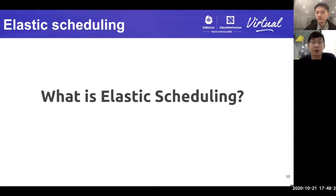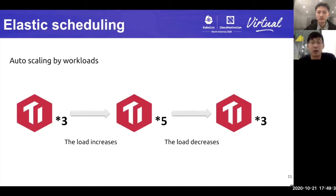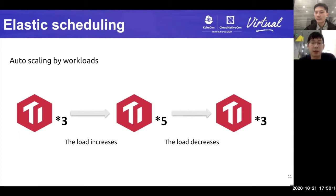Now let's move on to elastic scheduling in TiKV. What is elastic scheduling? Briefly speaking, elastic scheduling is auto-scaling depending on the workloads. When the TiKV cluster is deployed, normally the scaling of TiKV cluster is able to handle the average load. But sometimes the workload becomes larger, requiring the operator to manually scale out the TiKV cluster. When heavy workloads get lower, the operator also needs to manually scale in to save resources and cost. Elastic scheduling makes the whole process automatic.